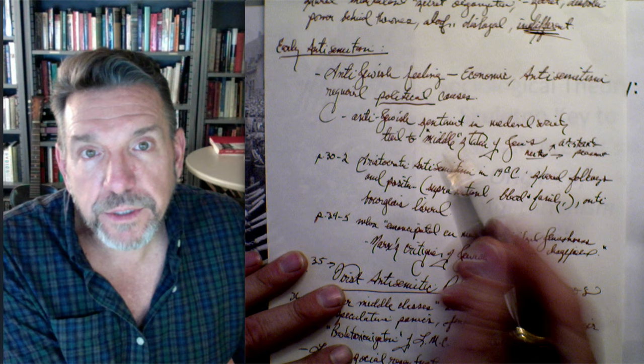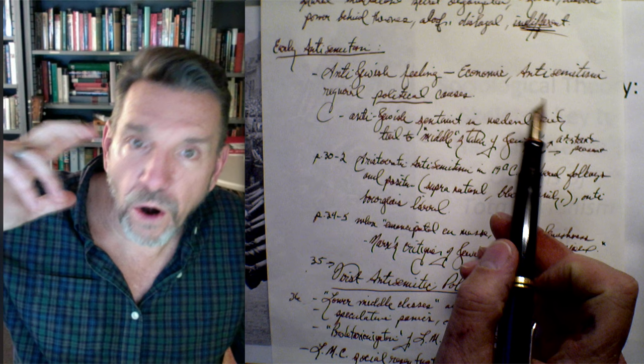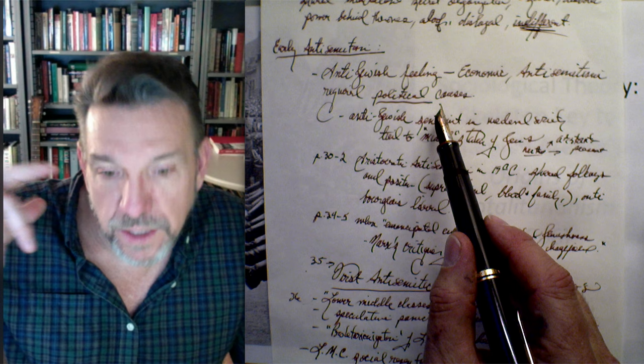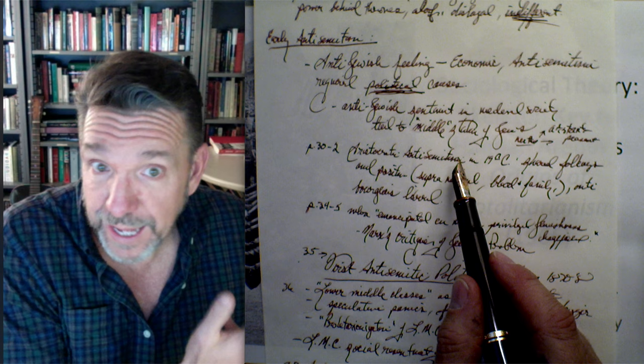On to early antisemitism. Anti-Jewish feeling tended to grow out of economic interests, and Arendt's argument is that modern antisemitism is always more than simply economic resentment or economic competition. There's always a political excess to it — it's a political movement. Anti-Jewish sentiment in medieval society was often economic, tied to the middle-class status of Jews in a world predominantly divided between aristocratic overlords and peasants.